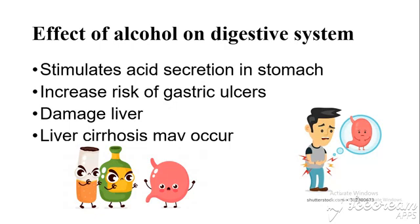Regarding the effect of alcohol on the digestive system: alcohol stimulates acid secretion in the stomach and increases the risk of gastric ulcers. It also damages the liver and liver cirrhosis may occur. Liver cirrhosis is a disease in which the liver cells are destroyed and replaced with fibrous tissue, making the liver less able to function.